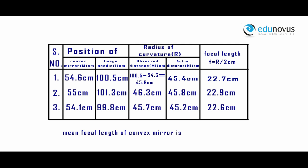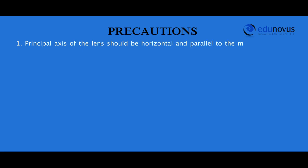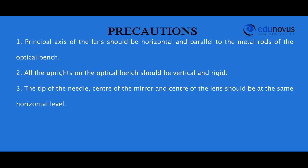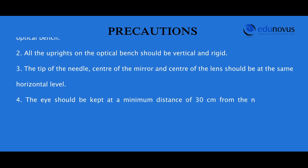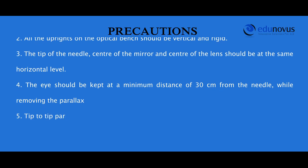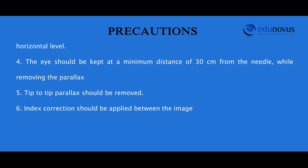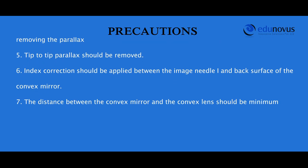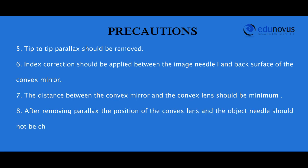Similarly, other readings are taken and the mean focal length of the convex mirror is 68.2 divided by 3, which is 22.73 centimeters. Precautions: the principal axis of the lens should be horizontal and parallel to the metal rods of the optical bench; all uprights should be vertical and rigid; the tip of the needle, center of the mirror, and center of the lens should be at the same horizontal level; the eye should be kept at a minimum distance of 30 centimeters from the needle while removing parallax; tip-to-tip parallax should be removed; index correction should be applied between the image needle and back surface of the convex mirror; the distance between the convex mirror and convex lens should be minimized; and after removing parallax, the positions of the convex lens and object needle should not be changed.